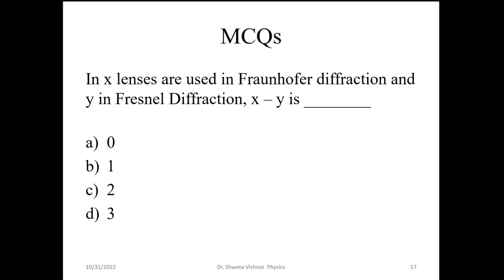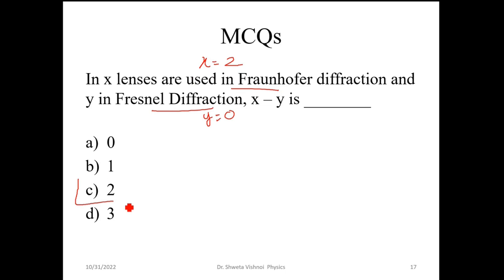If X lenses are used in Fraunhofer diffraction and Y lenses are used in Fresnel diffraction, what is X minus Y? In Fraunhofer diffraction, 2 lenses are used, so X equals 2. In Fresnel diffraction, 0 lenses are used, so Y equals 0. Therefore X minus Y equals 2.